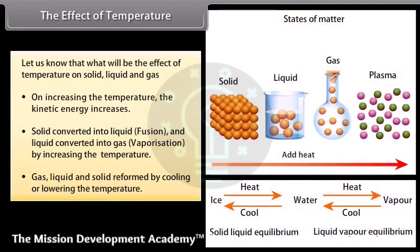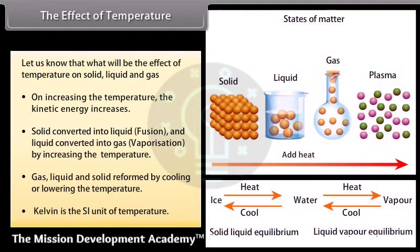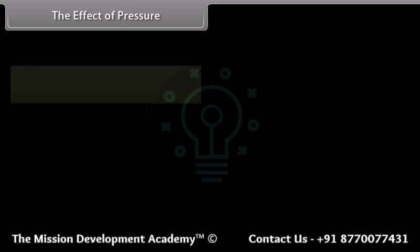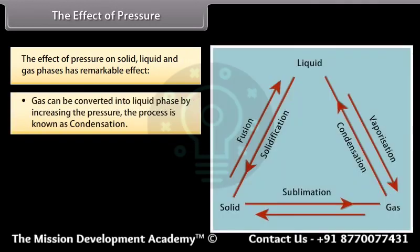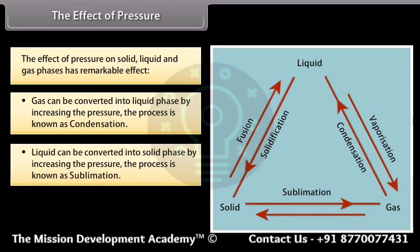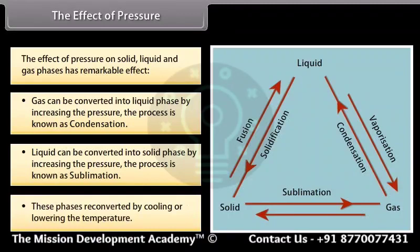Gas, liquid, and solid are reformed by cooling or lowering the temperature. Kelvin is the SI unit of temperature. The effect of pressure on solid, liquid, and gas phases has a remarkable effect. Gas can be converted into liquid phase by increasing the pressure — the process is known as condensation. These phases can be reconverted by cooling or lowering the temperature.